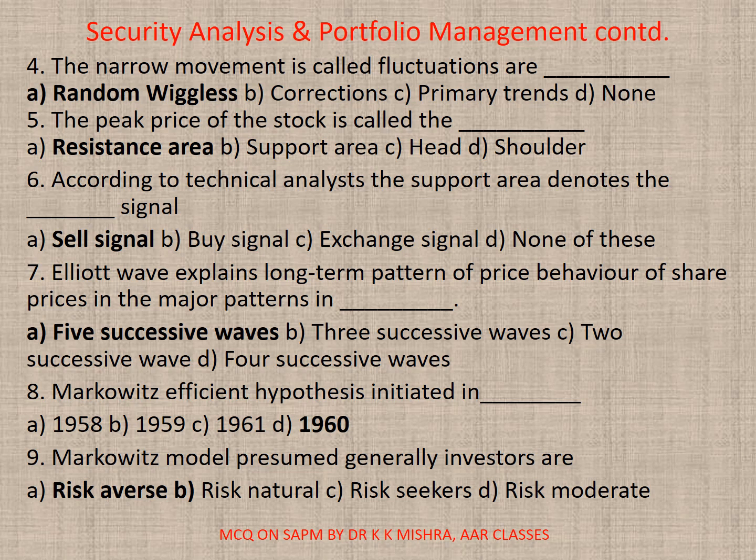Question 7: Elliott Wave explains the long-term pattern of price behavior of share prices. In the major patterns in Dow's theory — correct option is A — 5 successive waves. Question 8: Markowitz's efficient hypothesis was initiated in — correct option is A — 1960.